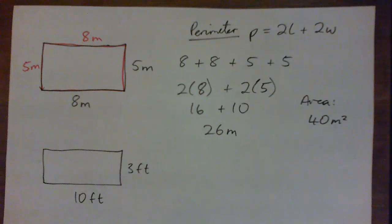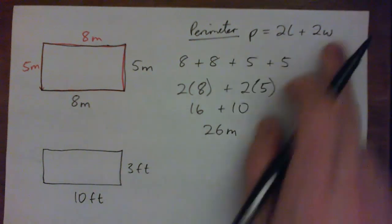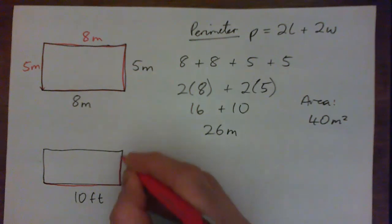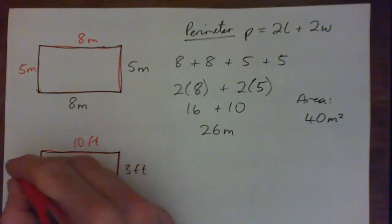The perimeter of this rectangle, again, is 4 sides. And the perimeter is 2 times the length plus 2 times the width. So it's this length, 10 feet, plus this width of 3 feet, plus 10 feet, plus 10 feet, plus 3 feet.